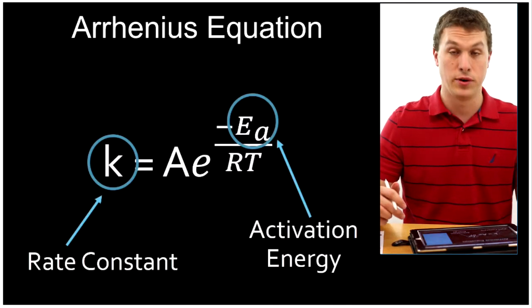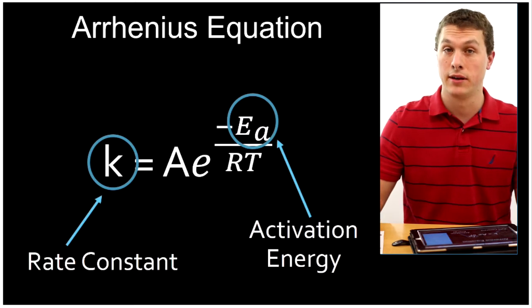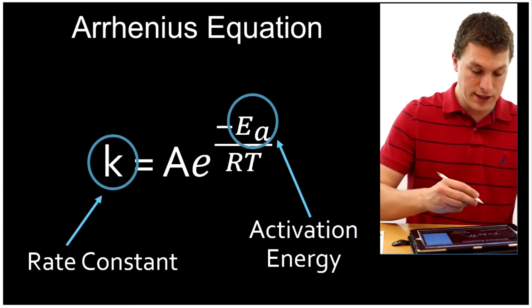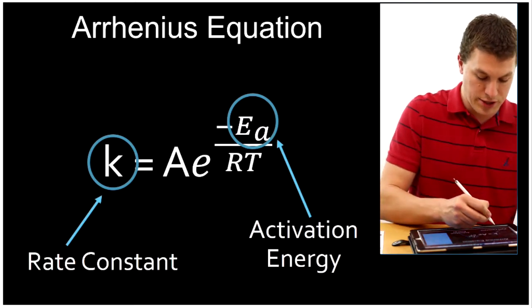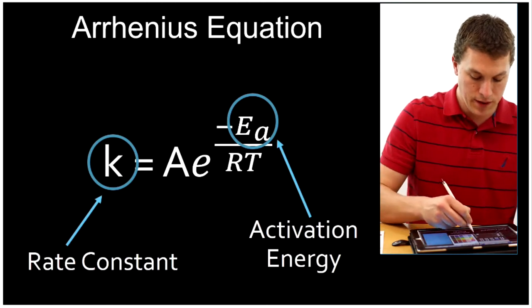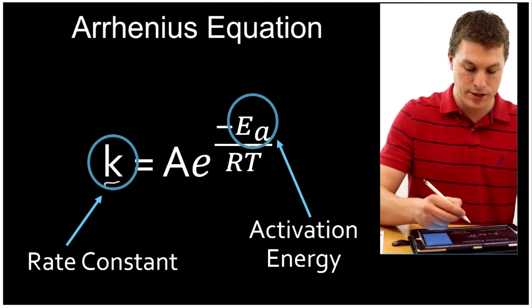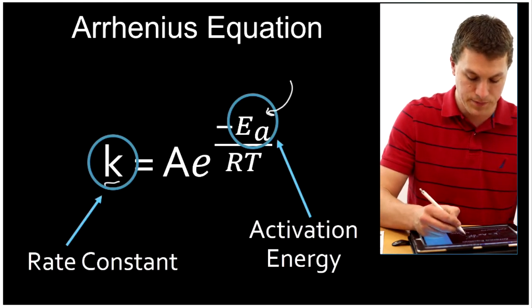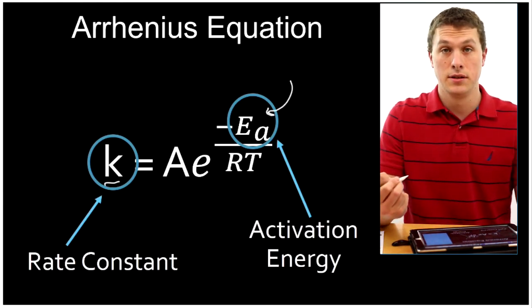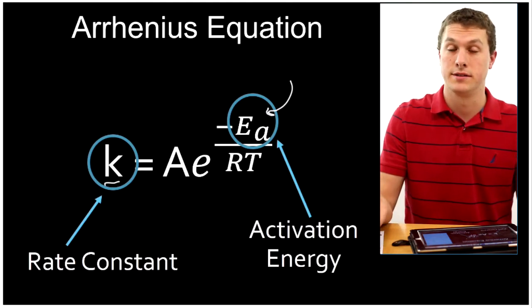So here's the Arrhenius equation. This is one way to calculate your rate constant. And you'll see that on the left hand side of the equation we have our rate constant. And then on the right hand side of the equation we have activation energy, right there. So our activation energy plays a role in determining our rate constant.